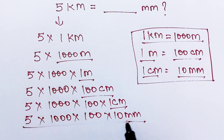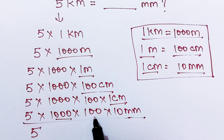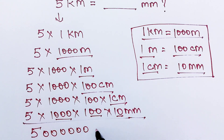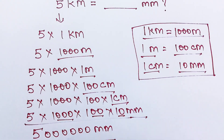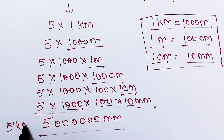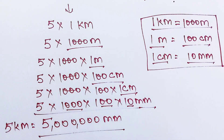Now we multiply these terms: 5, and here we have 3, 2, 1 — a total of 6 zeros — and millimeters. So, 5 kilometers is equal to 5 million millimeters. And that's your final answer.